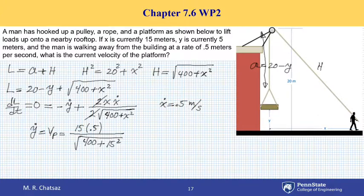So taking a calculator and doing the numerical calculation, Y dot, which is velocity of the platform, turns out to be 0.3 meters per second.